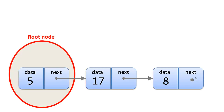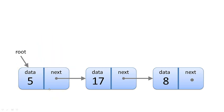Every linked list also has a root node, and the root node is the very first node in the list. The linked list has a pointer to the root node so that it knows where to start iterating the linked list.